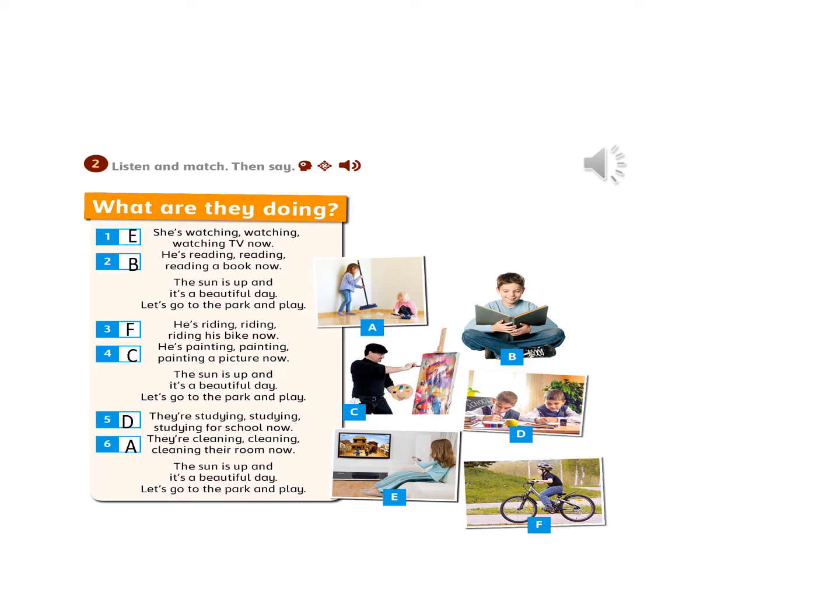Listen and match. Number one — she's watching TV now. Perfect, it's picture E. Number two — he's reading a book now. Perfect, picture B. Number three — he's riding his bike now. Excellent, it's picture F. Number four — he's painting a picture now. Perfect, it's picture C. Number five — they are studying for school now. Excellent, it's picture D. Number six — they are cleaning their room now. Perfect, it's picture A. If you have any mistakes, please correct them.